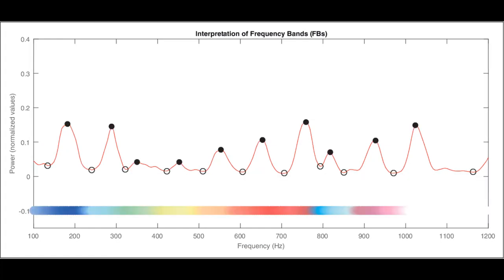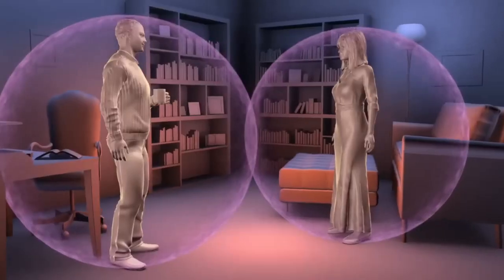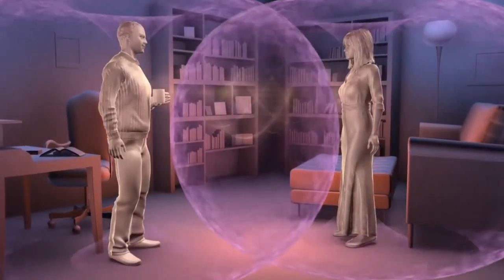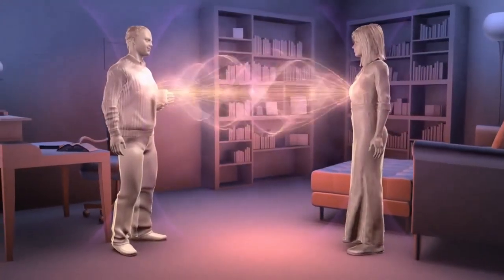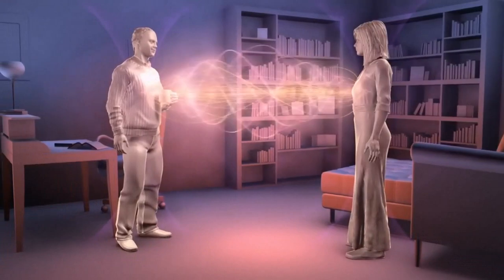The heart, with its intricate network of neurons and nerve synapses, serves as a powerhouse of electromagnetic energy, radiating signals that synchronize with the body's physiological rhythms. This energetic communication extends beyond the individual, shaping our interactions with the environment and those around us.